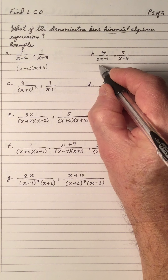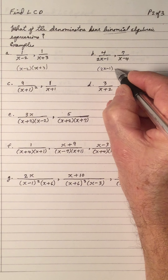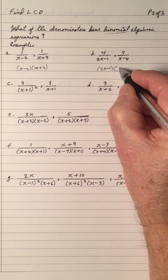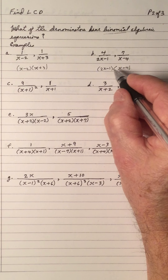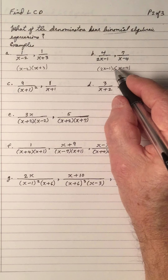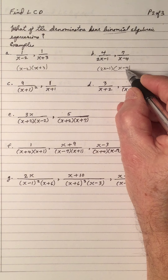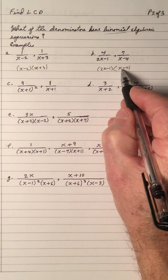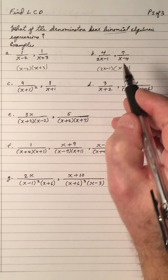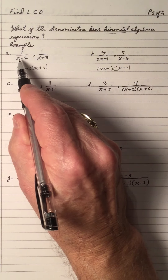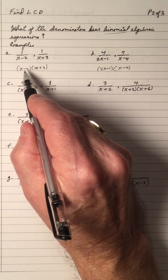Example B: the factor of the first denominator is (2x minus 1), and the factor of the second denominator is (x minus 4). Both denominators are different, so they both have to be written down. The LCD is (2x minus 1) times (x minus 4). These factors are totally different, so you have to have each one.